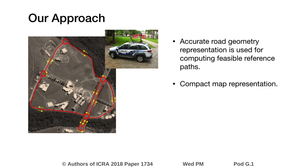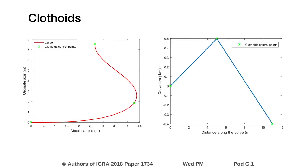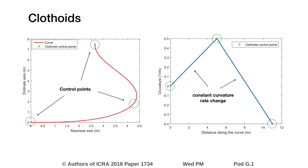Geometric representation should be compact. For this reason, only the geometric parameters of the road are stored. Clothoids are used for representing the road geometry. Clothoids are parametric curves defined by control points with a constant curvature rate change with respect to the travel distance. These parameters can be specified in order to obtain a kinematically feasible path with continuous curvature and to limit the steering rate change,